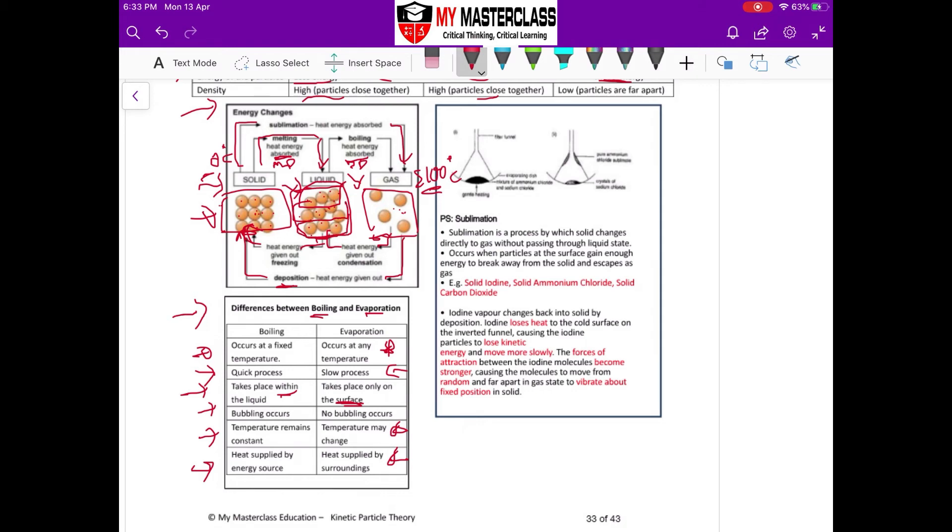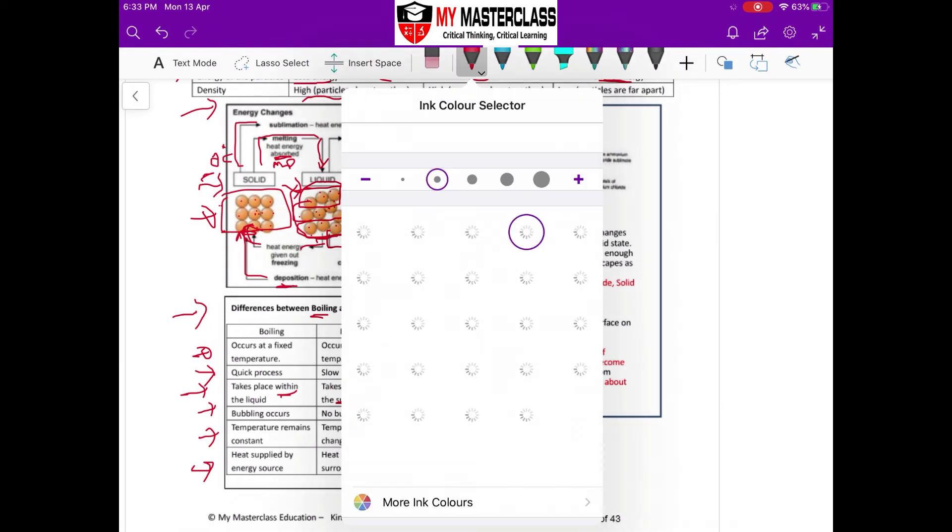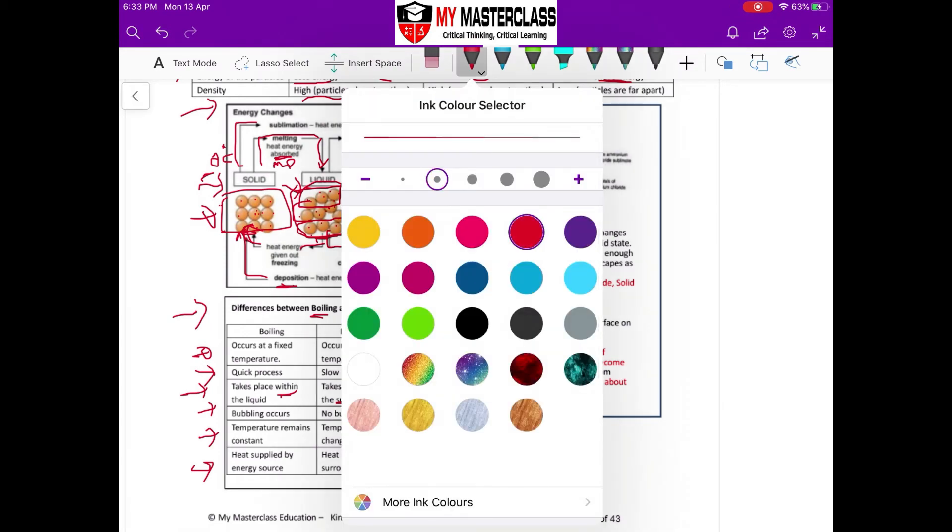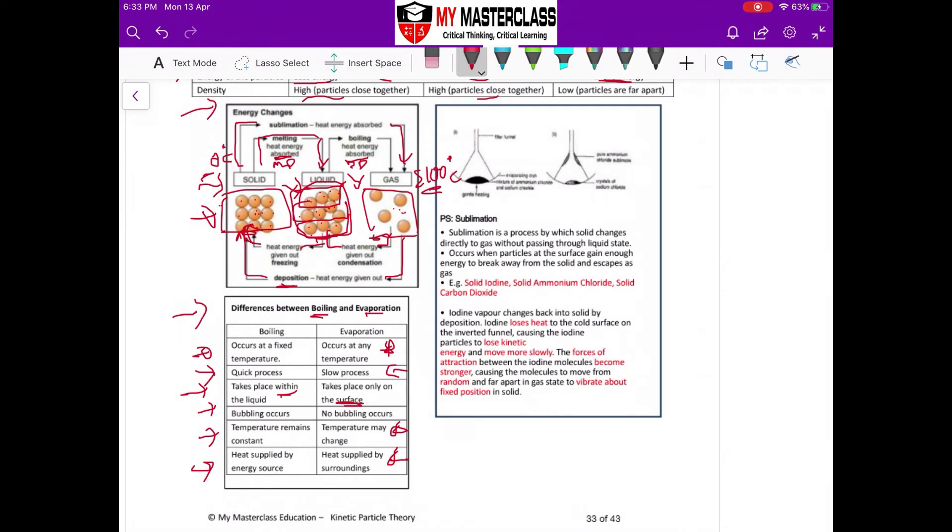This one actually we already talked about it just now over here in sublimation, but I'll just go through it again. Sublimation is the process where solid turns into gas directly. Sublimation occurs at the surface only, and it is when my solid gains enough energy and then they break away to escape as gas.